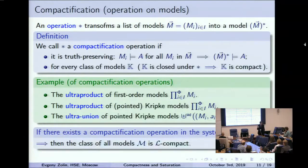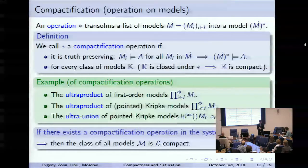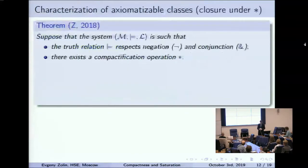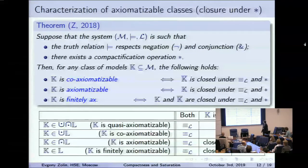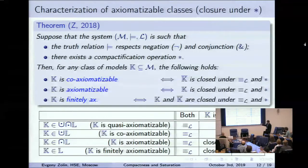An easy observation is that if our system has any compactification operation, then the class of all models is compact. So the first condition of our previous theorem is no longer needed. Now we can reformulate our previous theorem using closure under this operation. Suppose the truth relation respects negation and conjunction, and there is a compactification operation in the system. Then, similarly to Keisler's theorem, a class is axiomatizable if and only if it is closed under equivalence and under this compactification operation.